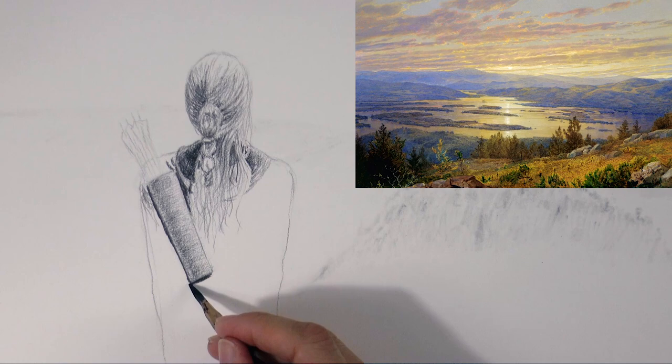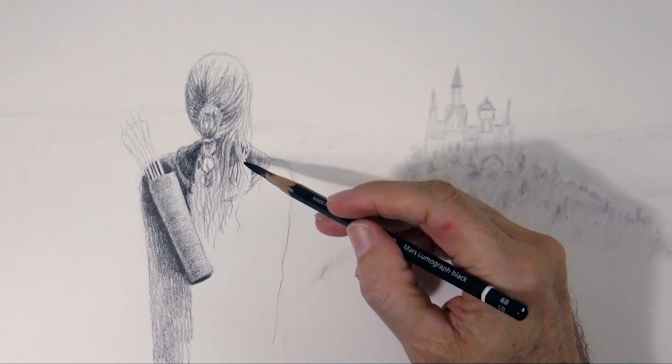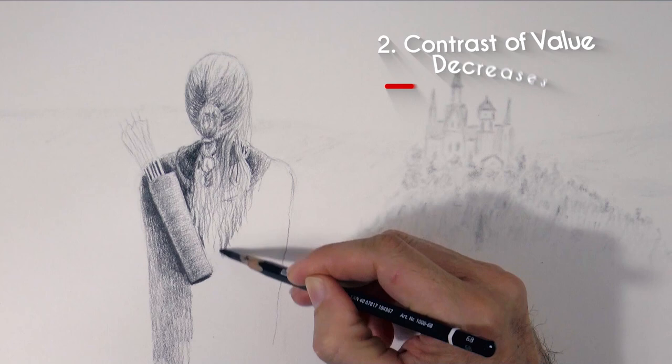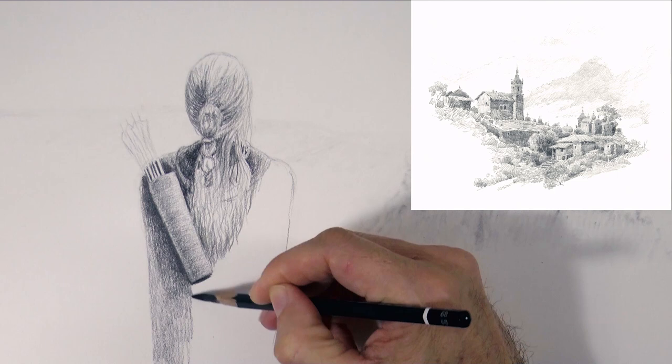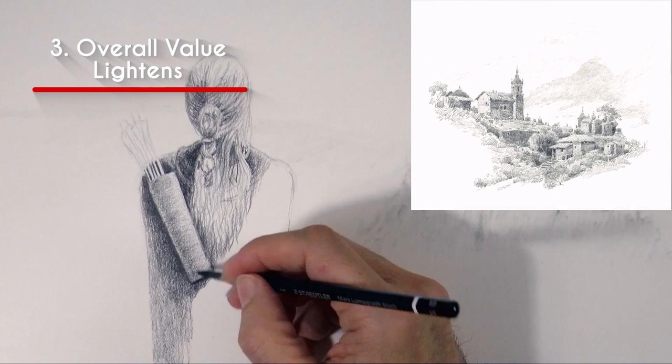Contrast of value decreases. The contrast between darks and lights decreases with distance, with no complete blacks or whites far away. Overall value lightens. Values also appear to lighten with distance. A mountain range far away appears lighter than the foreground.